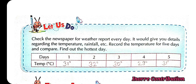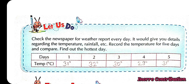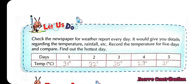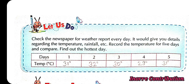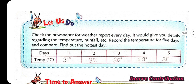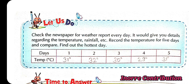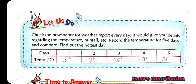Check the newspaper for weather report every day. It would give you details regarding the temperature, rainfall, etc. Record the temperature of 5 days and compare. Find out the hottest day. In the below table, the hottest day is the 2nd day at 32 degree Celsius. The lowest temperature is on the 4th day at 29 degree Celsius.